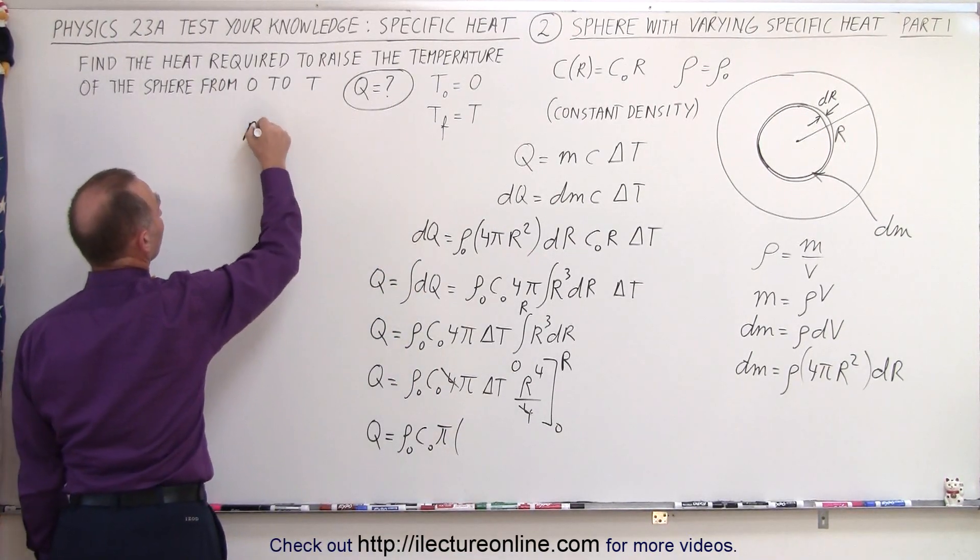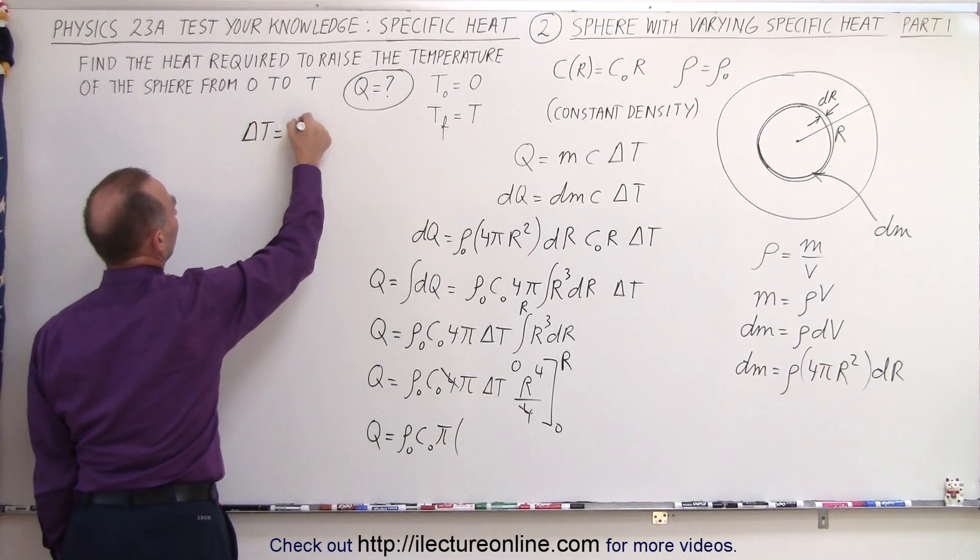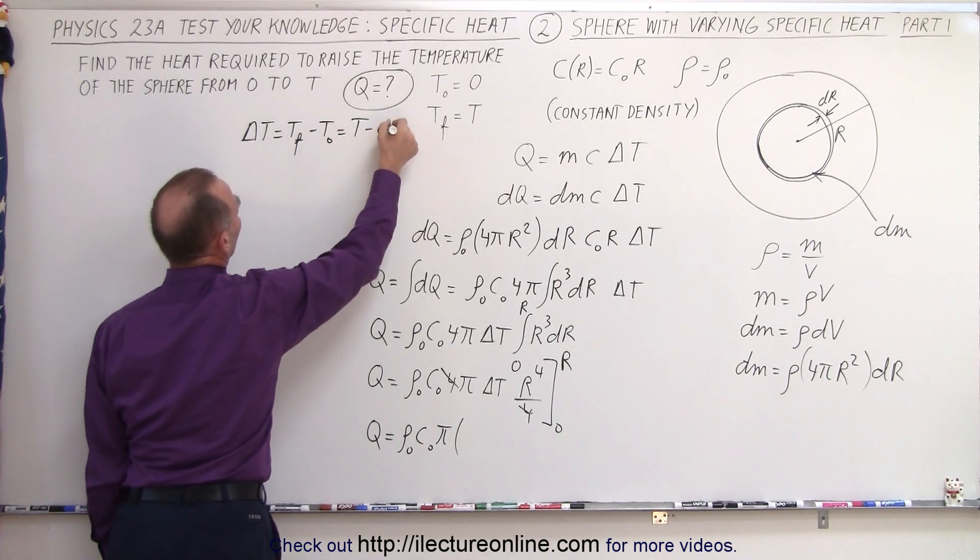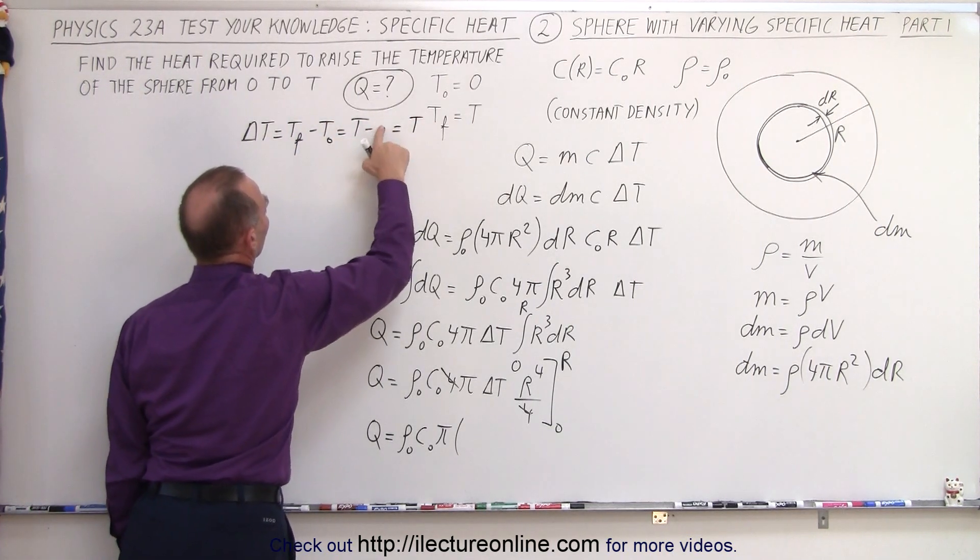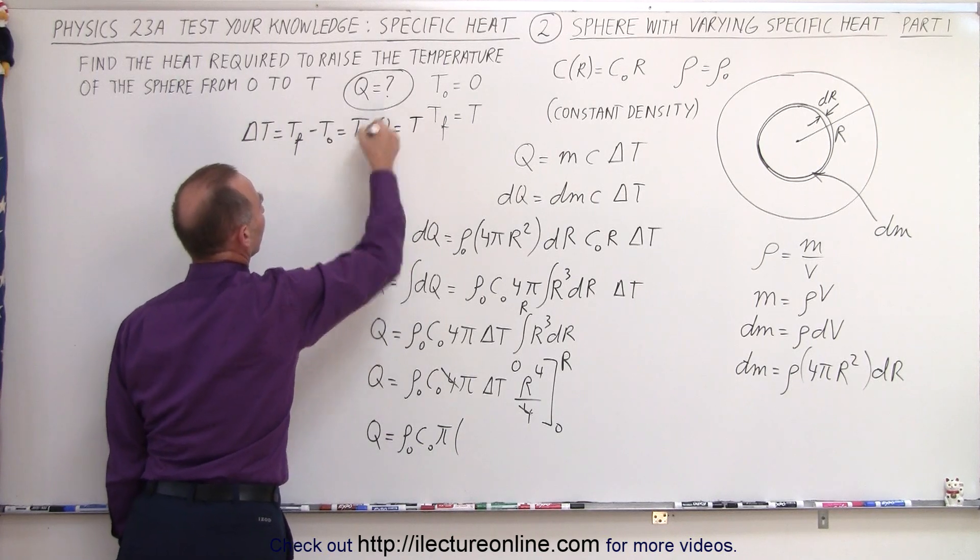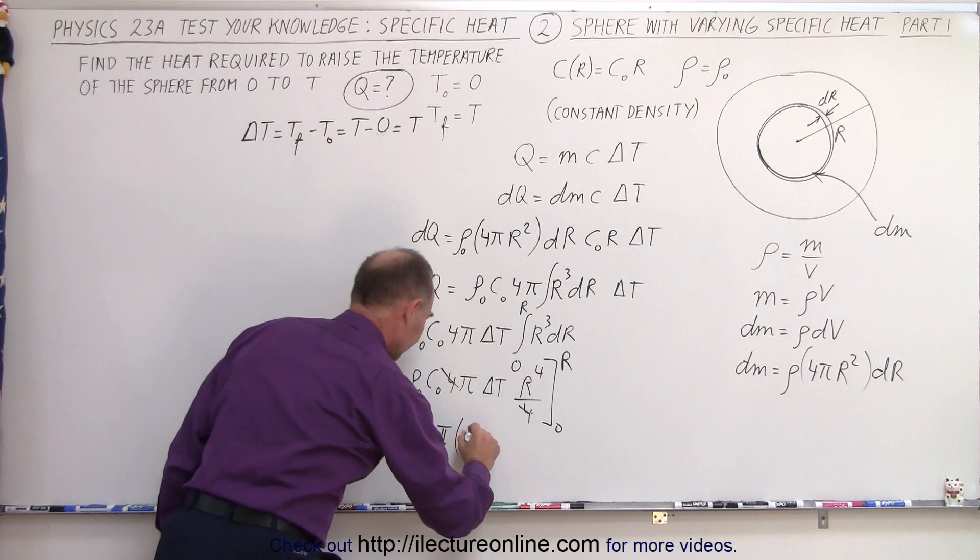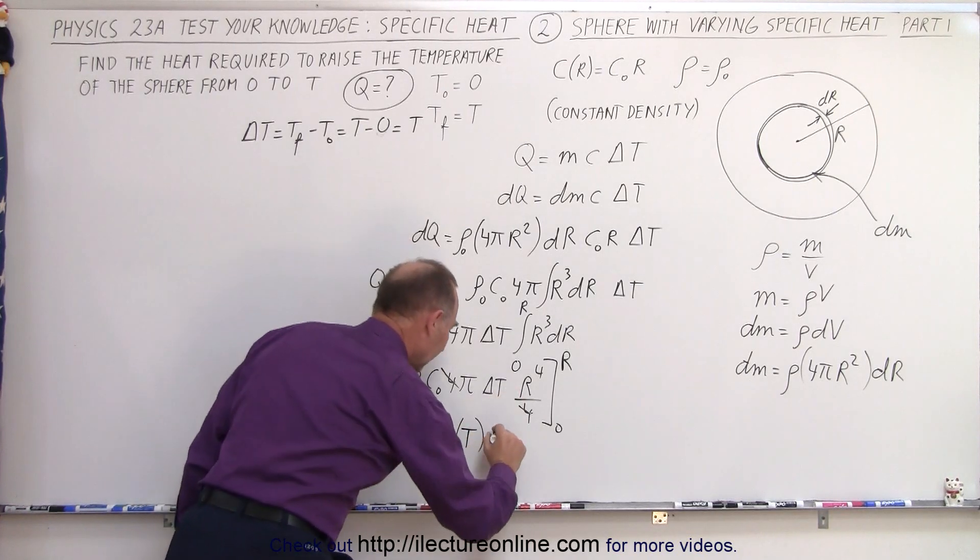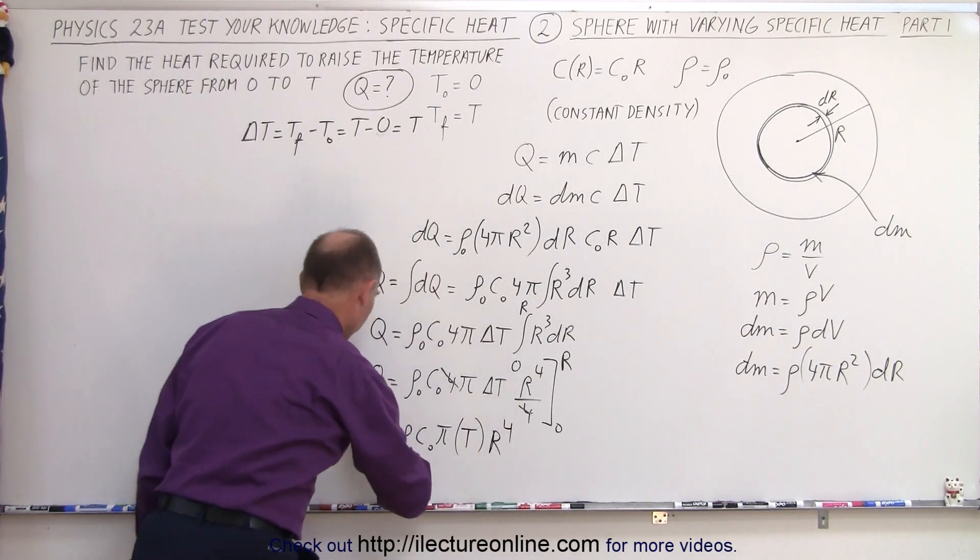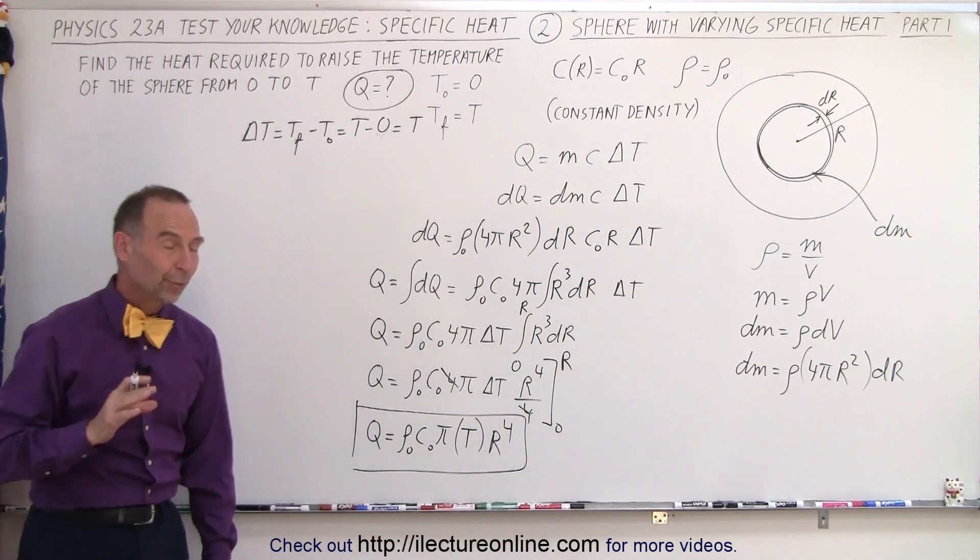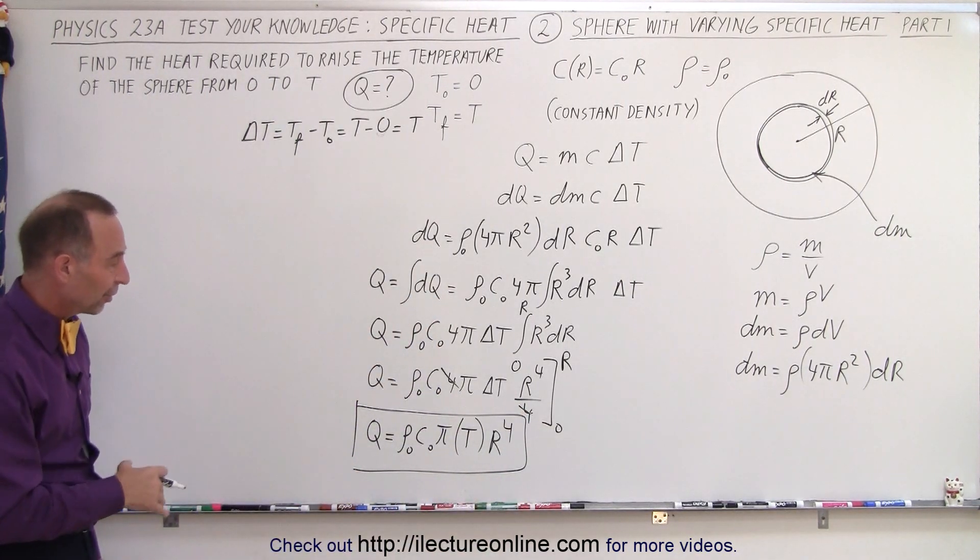Now notice that delta t is going to be equal to t final minus t initial, which is t minus 0, which is t. And so we can replace delta t by t multiplied times r to the fourth, and here is the total amount of heat required to raise the temperature of the sphere from 0 to t.